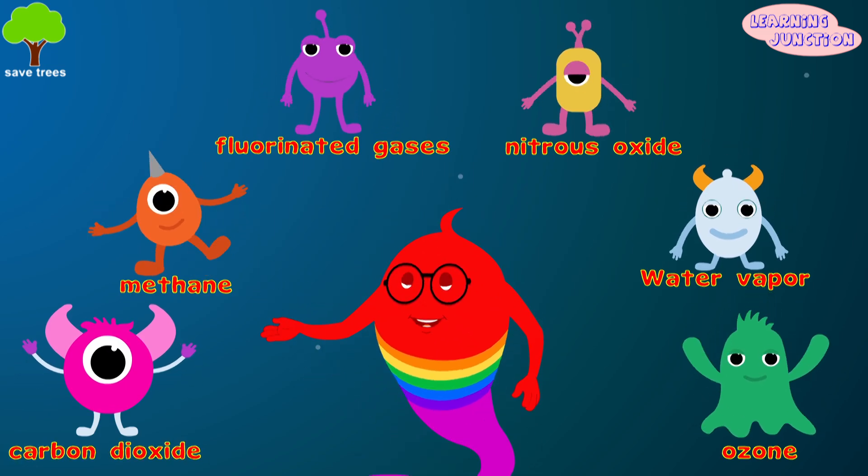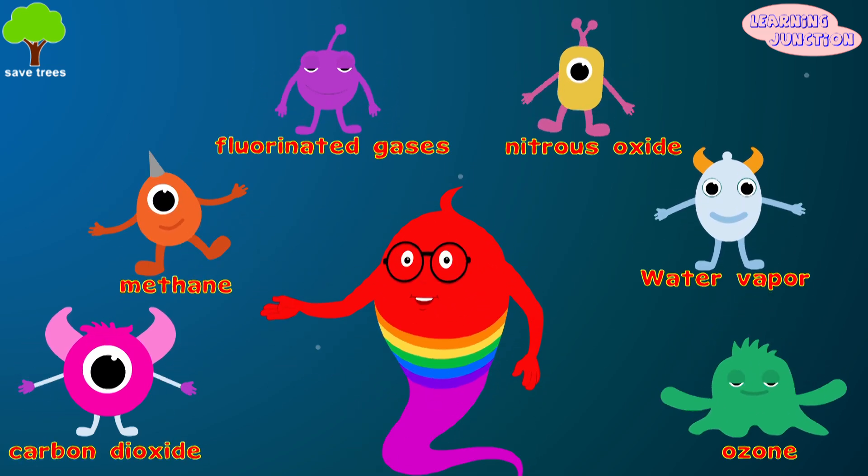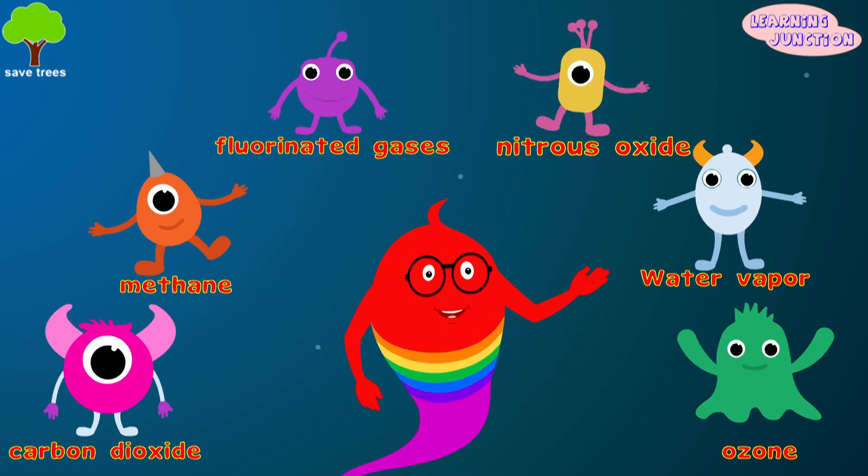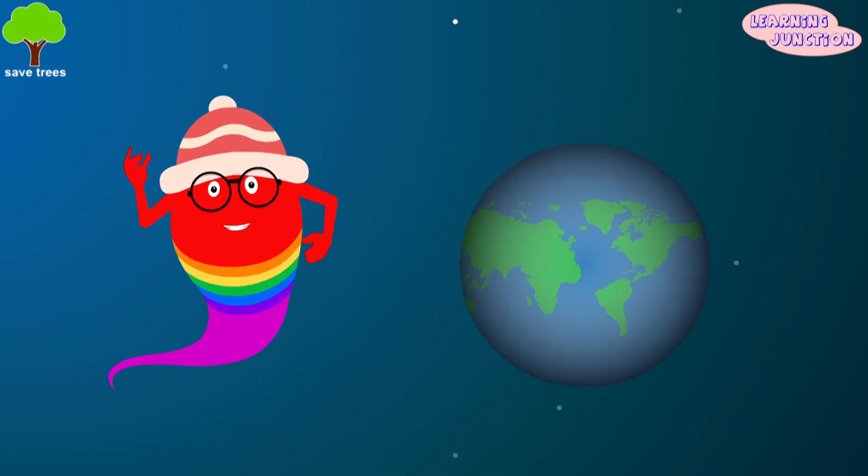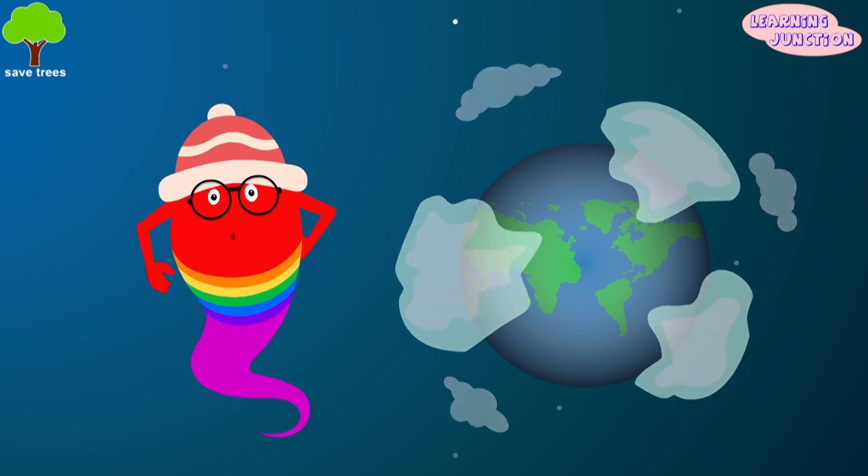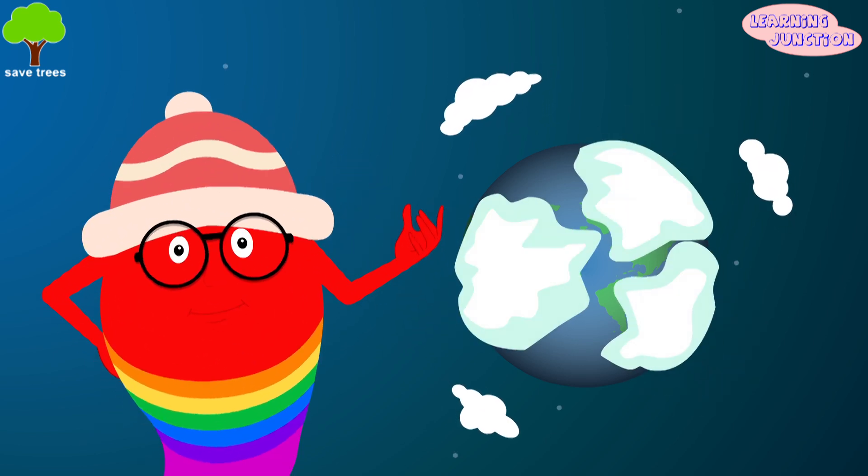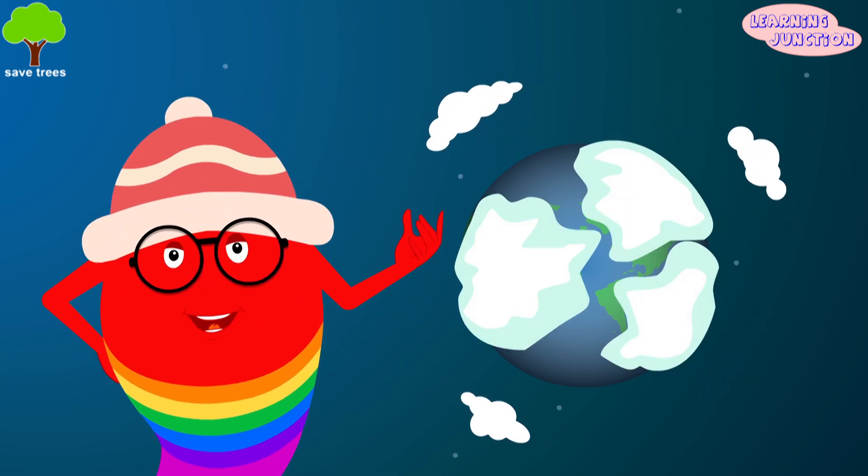These are carbon dioxide, methane, fluorinated gases, nitrous oxide, water vapor, and ozone. Without the greenhouse effect, Earth would be too cold for life to exist. It would be a solid ball of rock and ice.